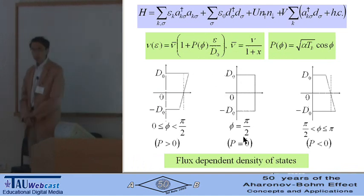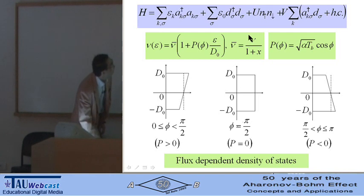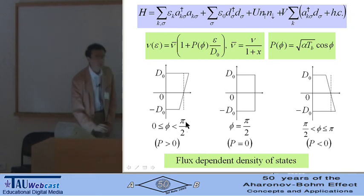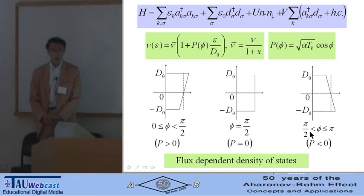The reduced model is described by the conventional impurity Anderson model, but the density of state in the lead is complicated, depending on the magnetic flux. This is the density of state when φ is smaller than half of π, and the density of state is like that when the AB phase is larger than half of π. All the information of the interference effect in the AB ring is involved in this magnetic flux dependence of the density of states.